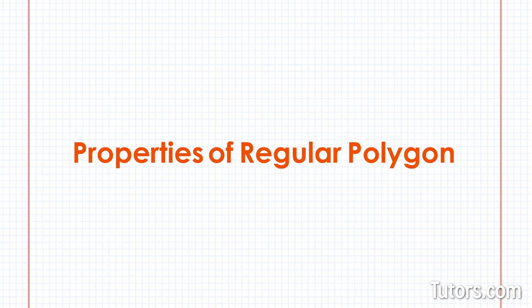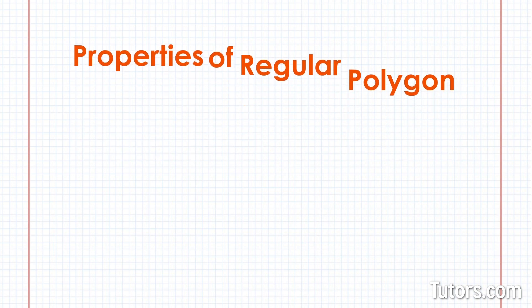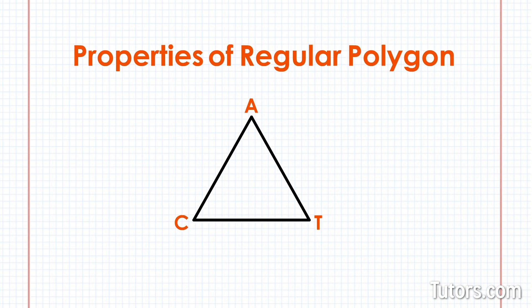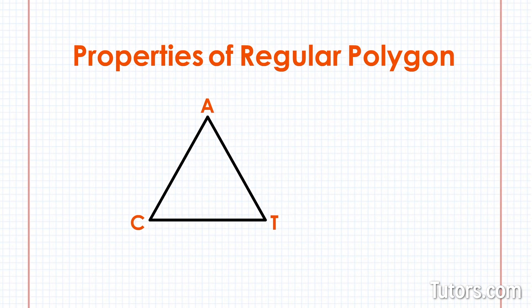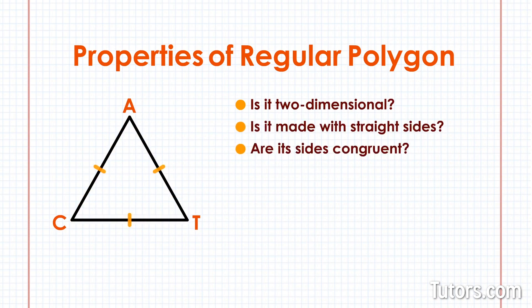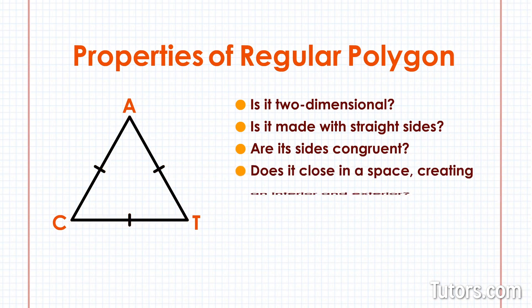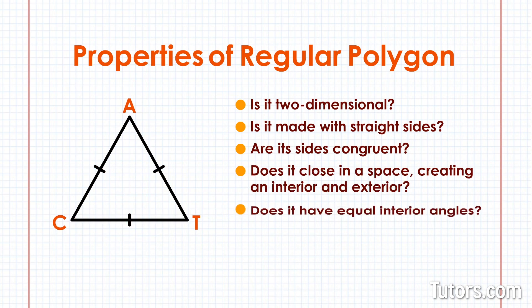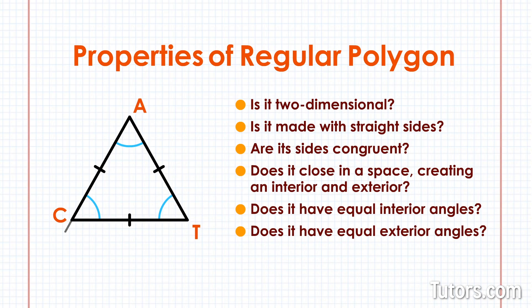Only when all six conditions are present will you have a regular polygon. Let's examine a suspicious shape: triangle CAT, drawn with black lines — our black cat is suspicious indeed. Go through the six properties: Is it two-dimensional? Made with straight sides? Are its sides congruent? Does it close in a space creating an interior and exterior? Does it have equal interior angles? Equal exterior angles? Triangle CAT passes all six — it is a regular polygon, an equilateral triangle with interior angles of 60 degrees and exterior angles of 120 degrees.